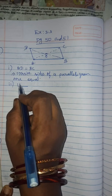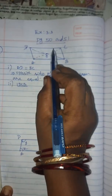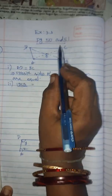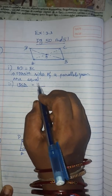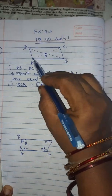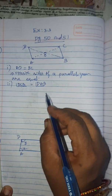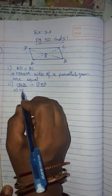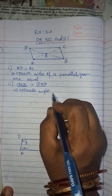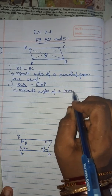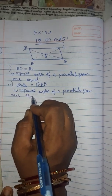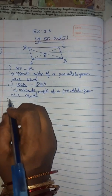Second, angle DCB is equal to what. DCB and DAB are opposite angles in the parallelogram, so angle DCB is equal to angle DAB. The property used: opposite angles of a parallelogram are equal.